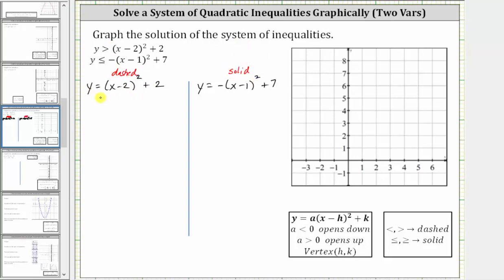Now looking at the form of the quadratic equations here, notice how they are in vertex form, sometimes referred to as standard form, which is y equals a times the quantity x minus h squared plus k. Where if a is positive, the parabola opens up. If a is negative, the parabola opens down, and the vertex is at h comma k.